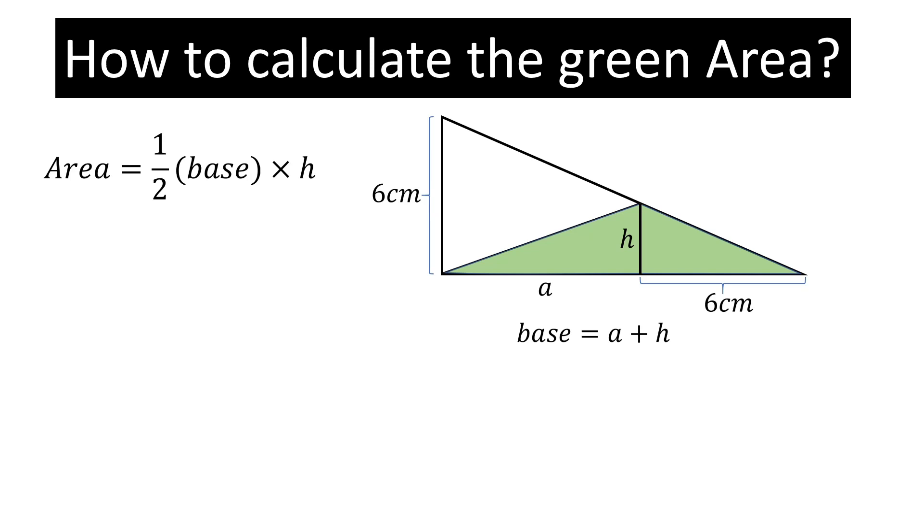We will put values here and we will get this. Now to calculate the green area, we just need to find the value of (a + 6) times h. Look at the triangle. In this triangle, there is one big triangle, triangle ABC.